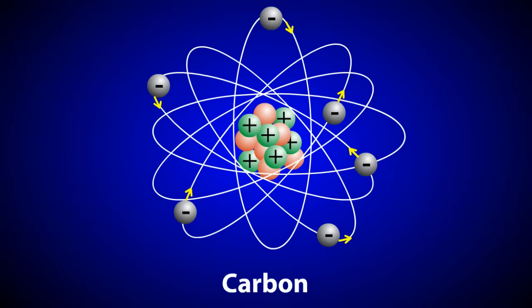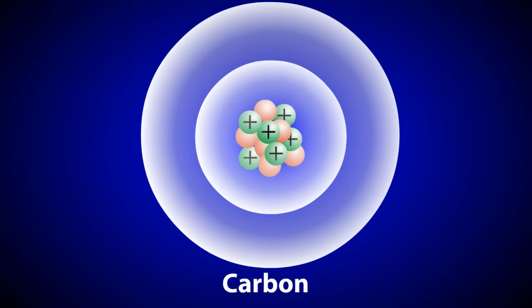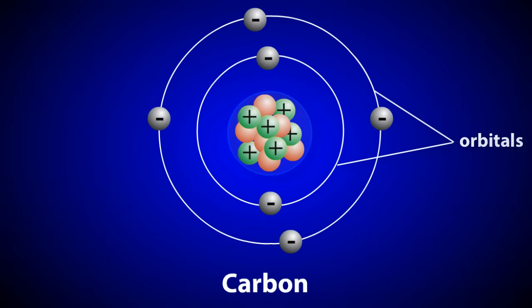For this reason, electrons are often shown as a negatively charged cloud around the nucleus. However, other diagrams show the electrons as existing in rings or orbitals. Orbitals are often used to illustrate the number of electrons at different energy states around the nucleus.